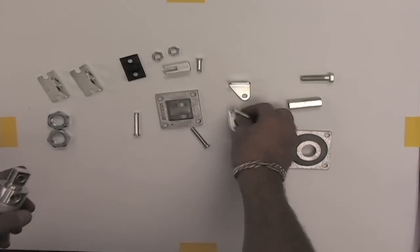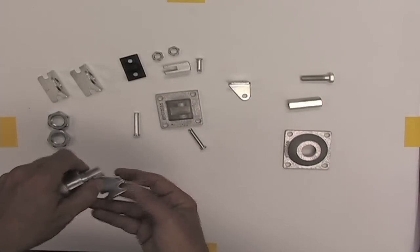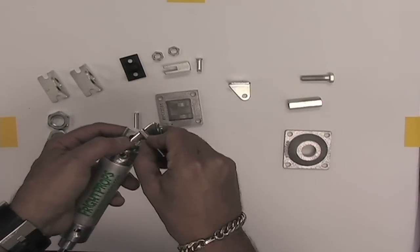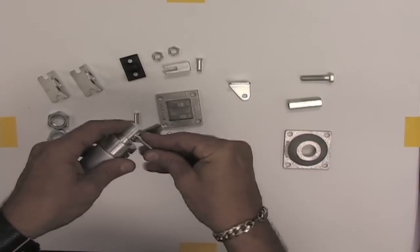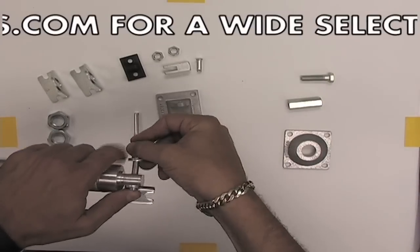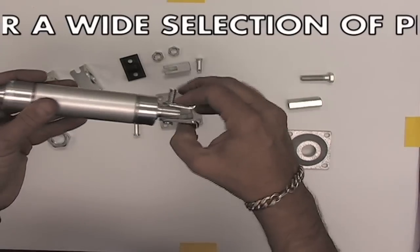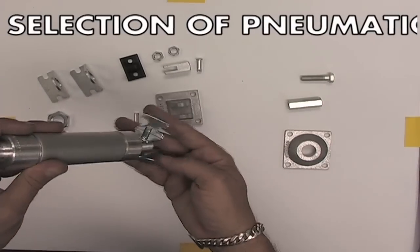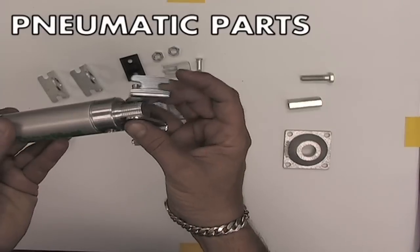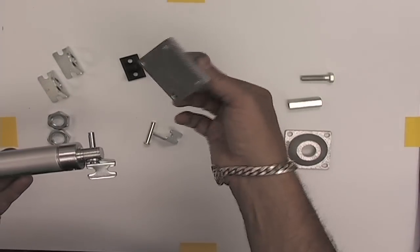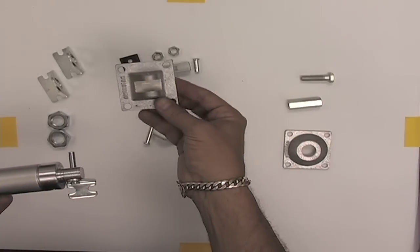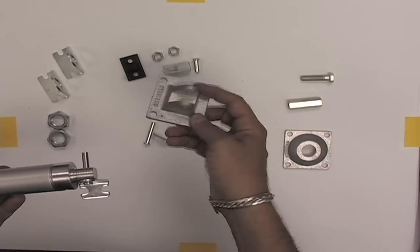We also offer a similar thing in a two-piece. Same thing - the pin goes through and it allows it to pivot. Two-piece is better when you're going to be welding because these pieces are weldable. A one-piece is not weldable, but you can bolt it down and it makes it a lot easier because it's one piece.